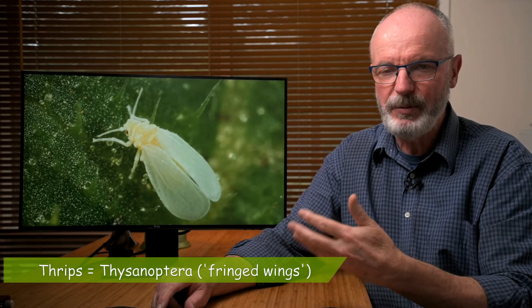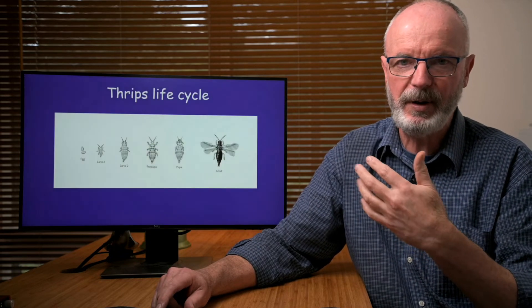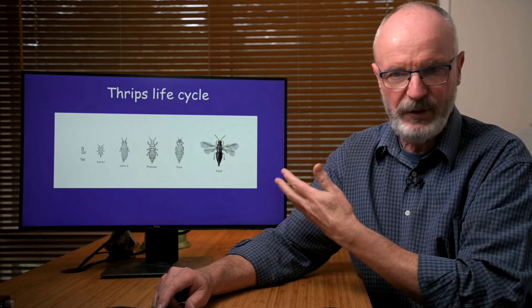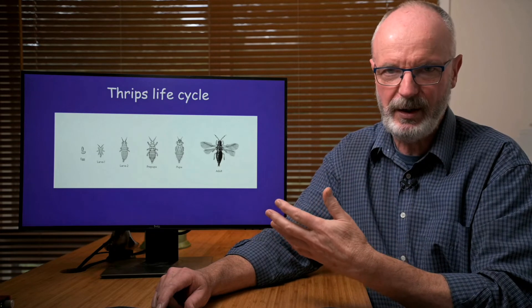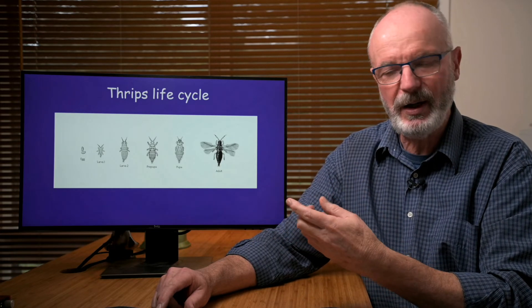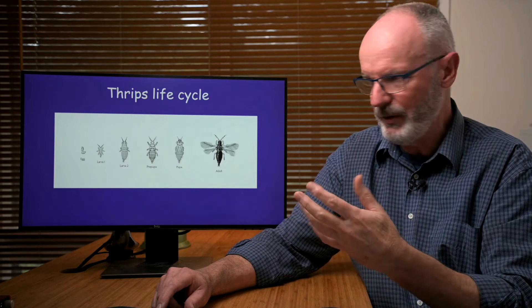Thrips also have a life cycle of intermediate metamorphosis. Thrips are in an insect order of their own, Thysanoptera, which means fringed wings. At some stage I will do a Bug Basics on insect classification. There are about 500 species of thrips found in Australia, and this is a typical life cycle. Thrips are very small, so you can imagine how tiny the eggs are. They're also translucent and laid usually inside leaf tissue, so you won't see them.